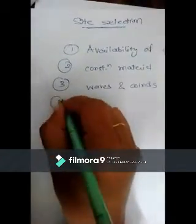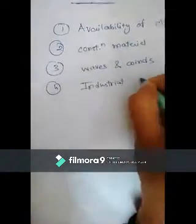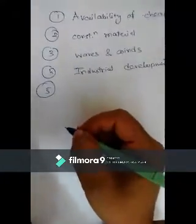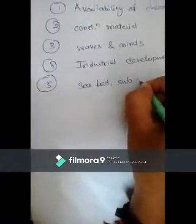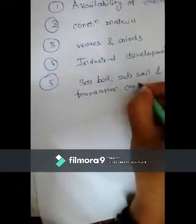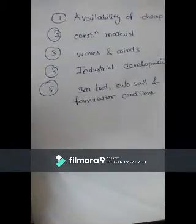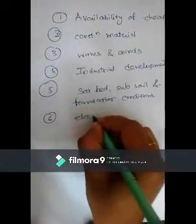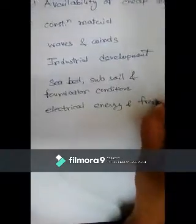The fourth point is industrial development of the area. The fifth point is seabed, subsoil, and foundation conditions of that site — if they are not in good condition to build a harbour, construction cannot proceed. The sixth point is availability of electrical energy and fresh water.